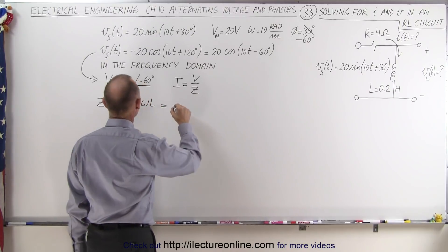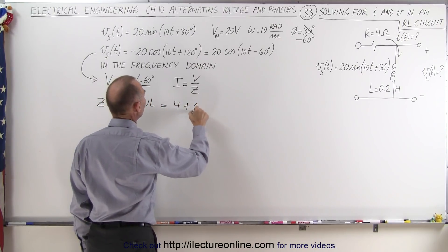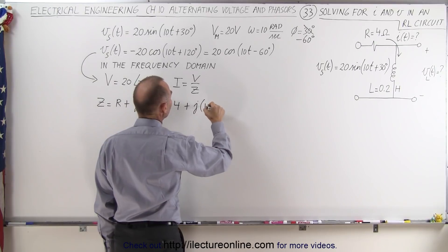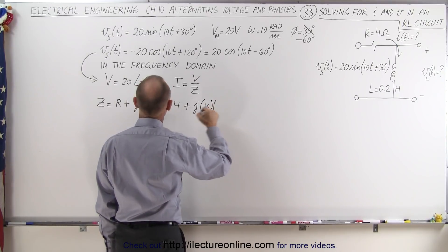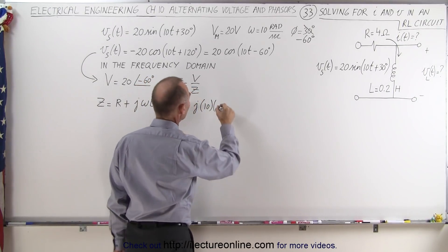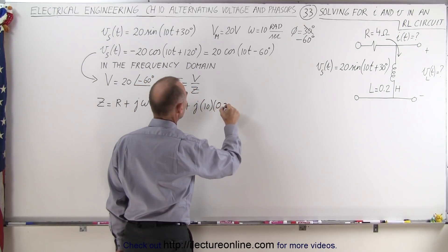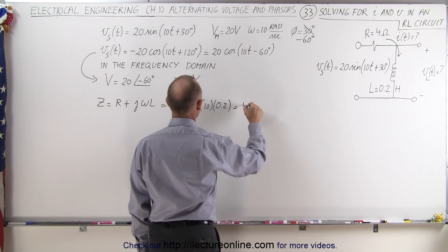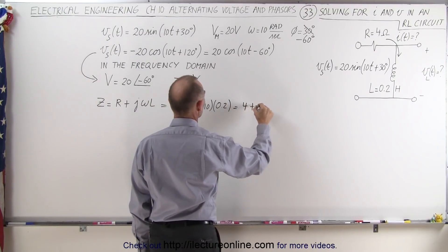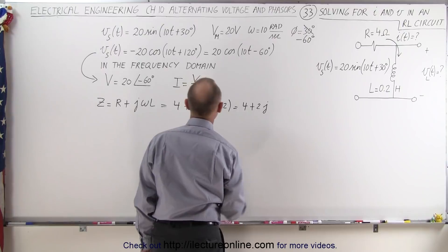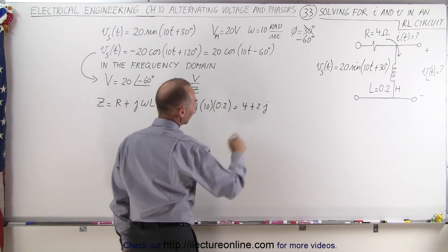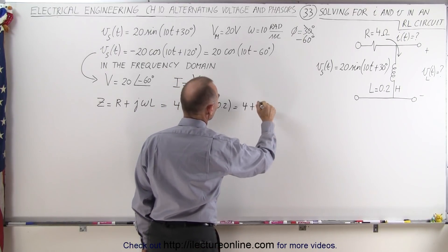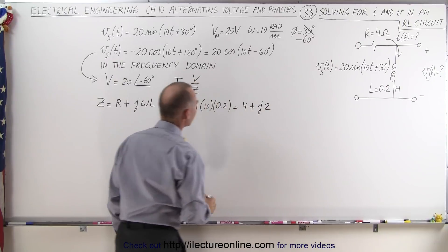Let's plug those values in. For the resistance we have 4 ohms, plus j times omega — which is 10 — times L, the inductance, which is 0.2. That gives us 4 plus j2 as the impedance. We like to write J in front, so we'll write it as 4 plus j2.